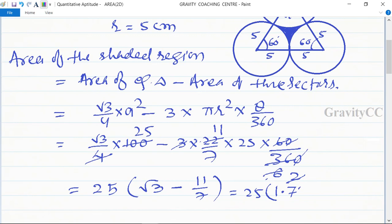So this equals 25 into 0.161, which equals 4.025 centimeter square.